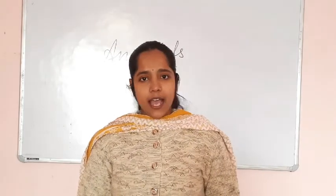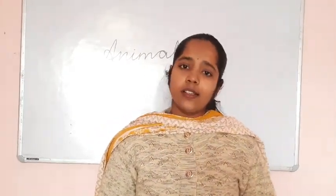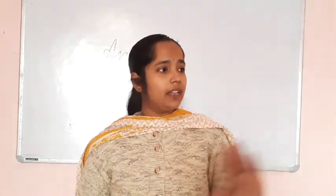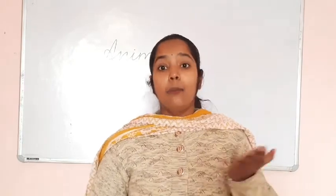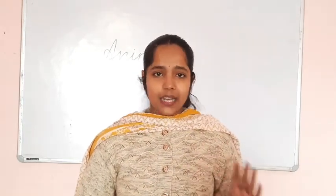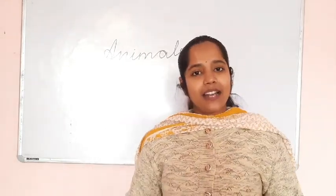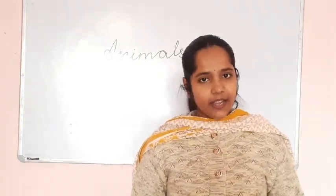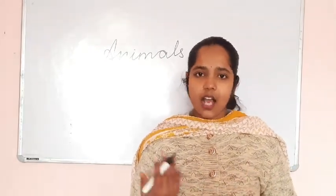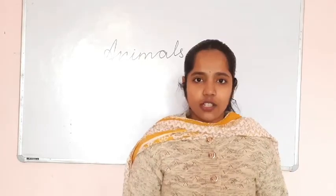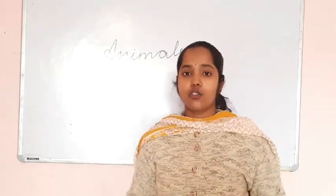We are going to learn about different types of animals. We see many animals around us in our surroundings, like dog, cat, rat, monkeys — so many animals. Animals are living creatures. They are living beings and need air, water, and food to live, just like us. We also need oxygen, water to drink, and food to eat so that we can live.